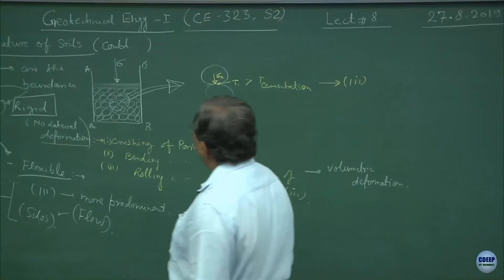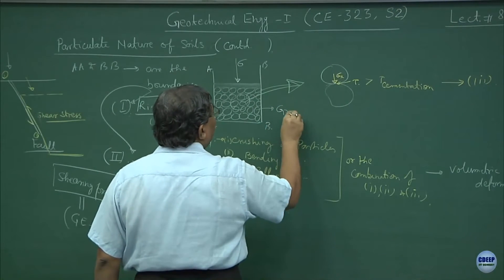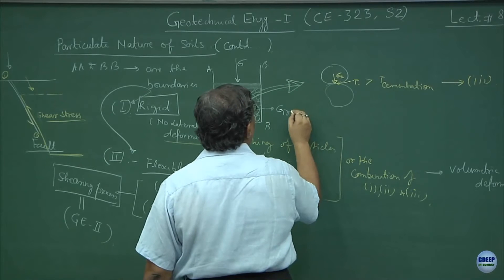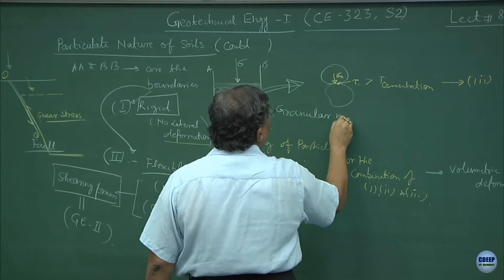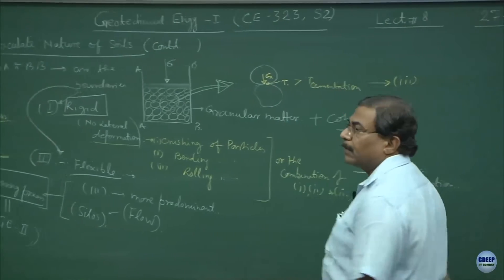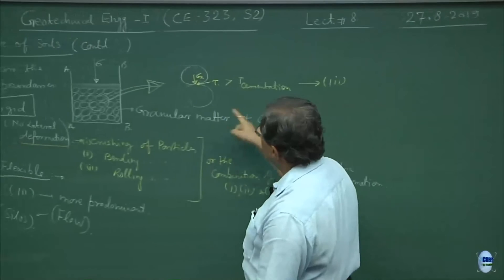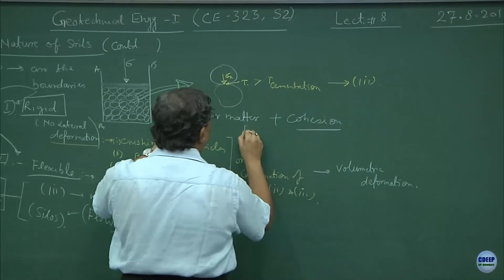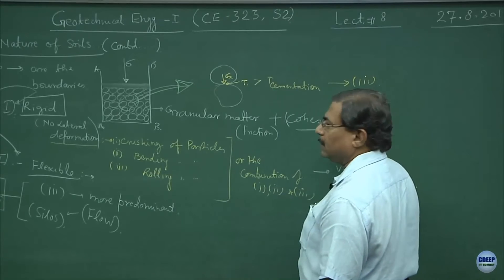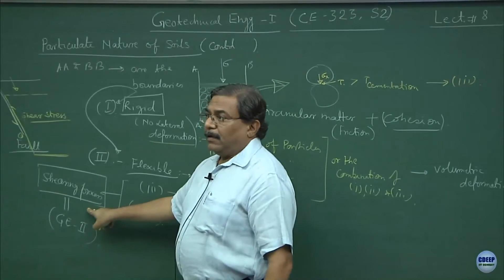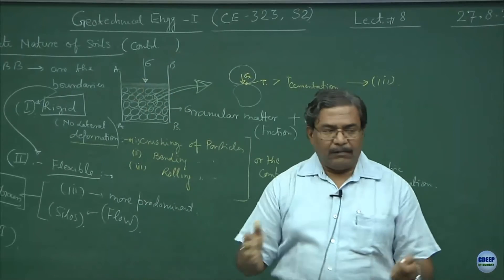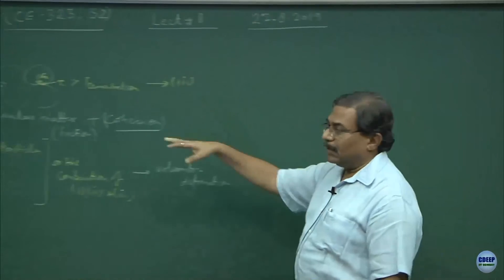If I complicate the system and say that rather than granular material, the material also has cohesion, the first question is: how do you differentiate between the friction component of strength and the cohesion component of strength? This we will discuss in the second course. First we have to understand the material itself. In this course, Geotechnical Engineering 1, the emphasis is to understand the material rather than going into shear strength characteristics.